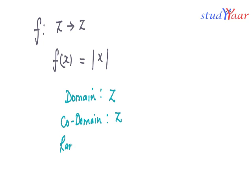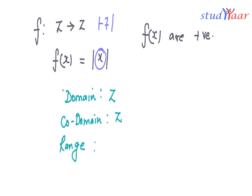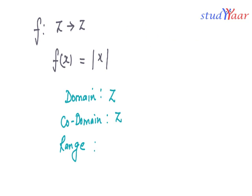What is the range? All the f(x) values are positive. For example, if x equals minus 7, then f(x) equals |−7| which is 7. Therefore, the range of this function is Z⁺, the set of all positive integers. Note that Z⁺ is a subset of Z, which is always the case.